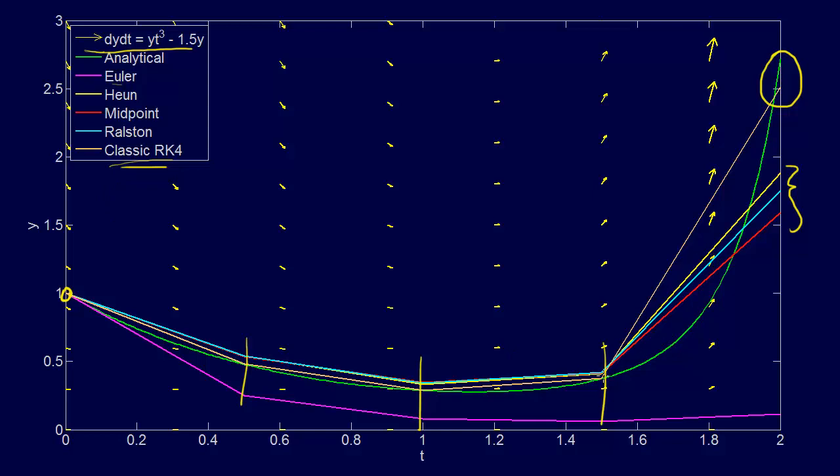even though we're only plotting it here and here, with the fourth order Runge-Kutta, we're sampling points all over in the middle, so we know what the slope field is doing, and that's why we're able to make this better prediction.